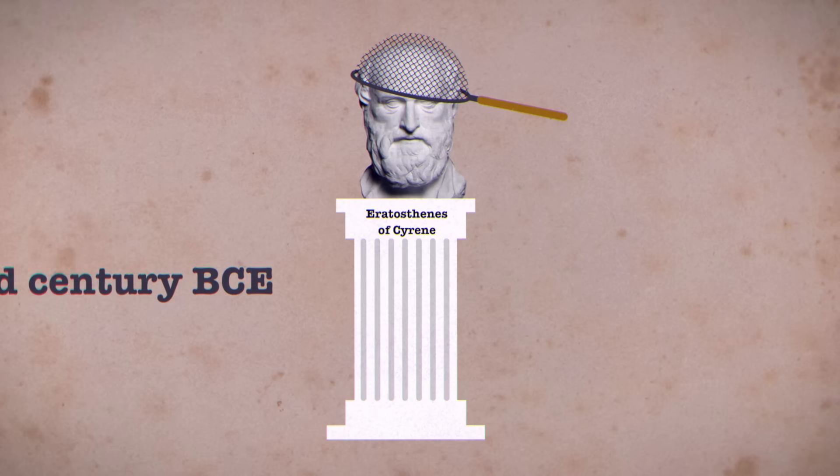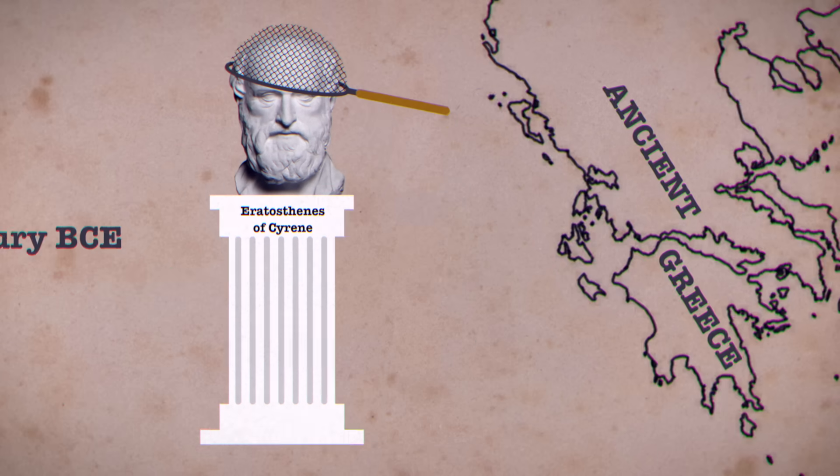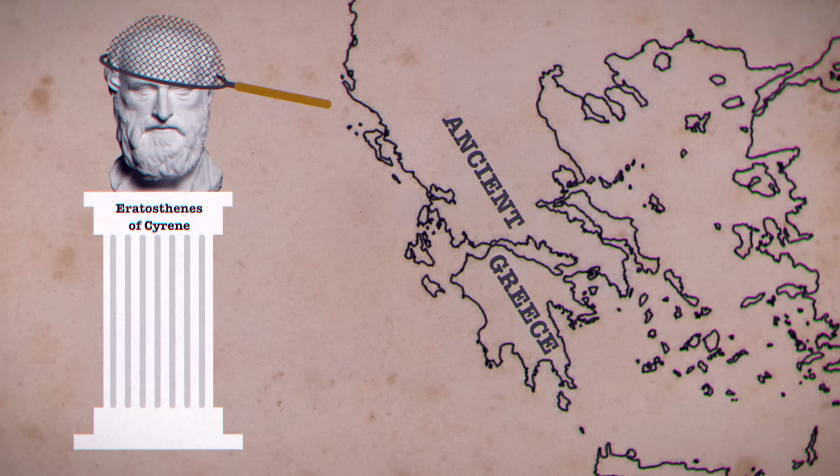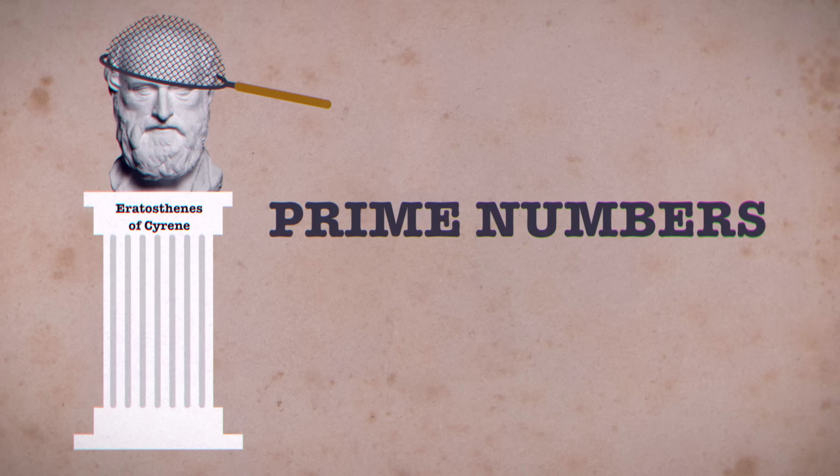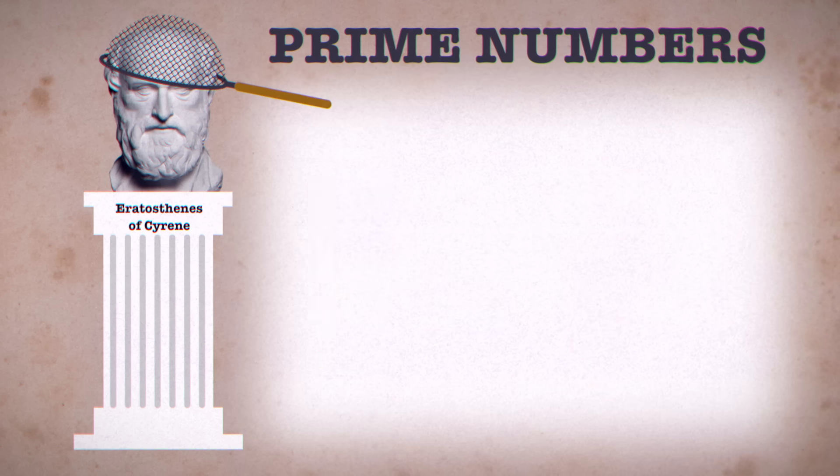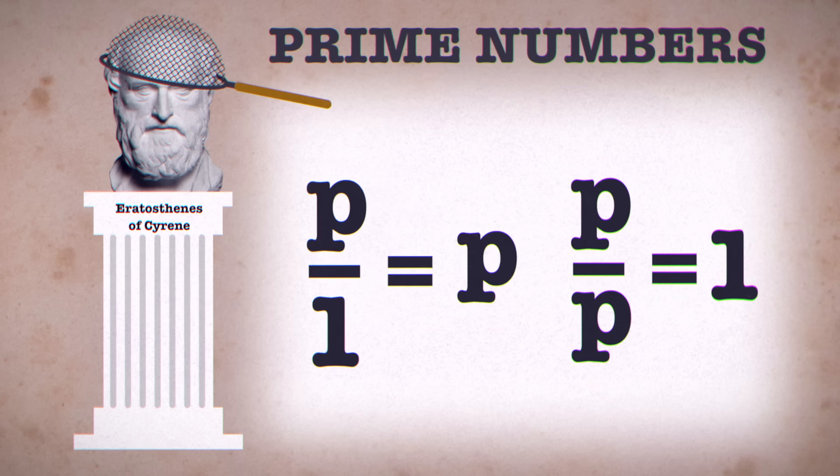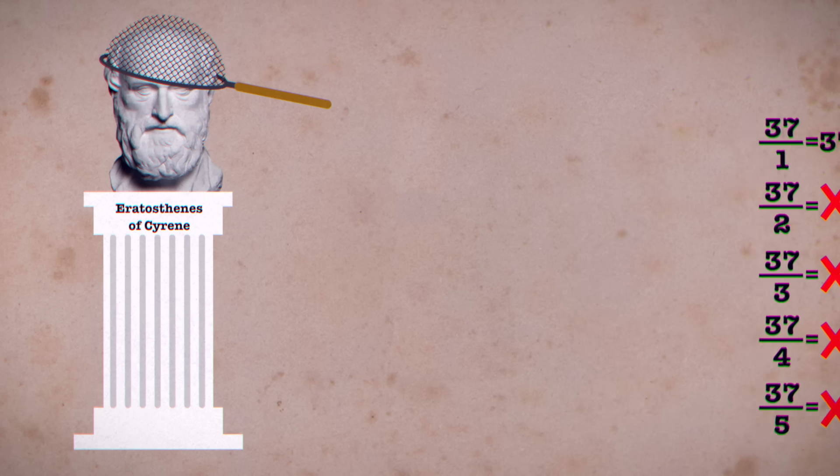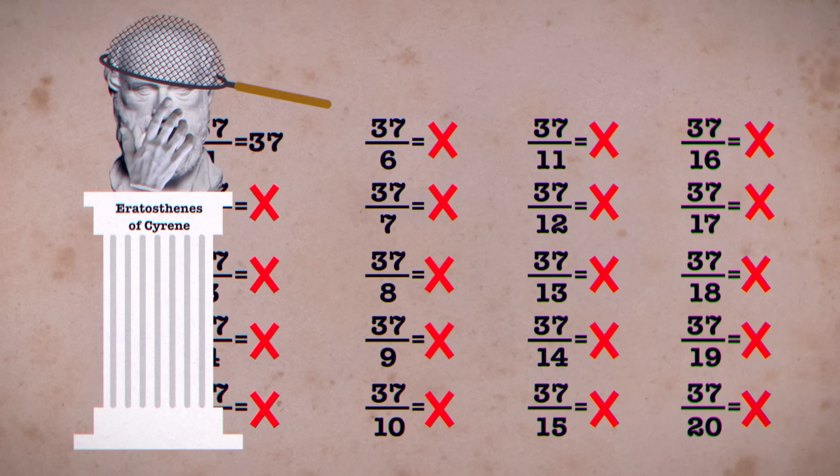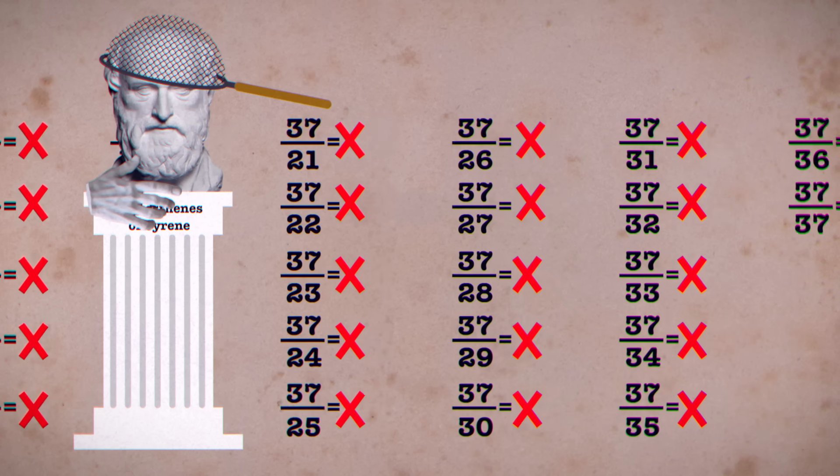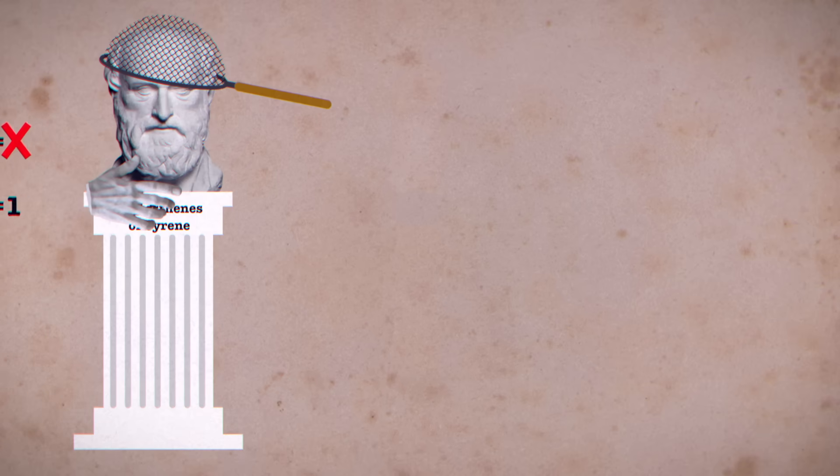Eratosthenes of Cyrene was a 3rd century BCE mathematician from ancient Greece interested in prime numbers. That is, numbers only divisible by 1 and themselves. Presumably, he grew bored of manually checking whether a given number was prime, so he came up with the following technique.